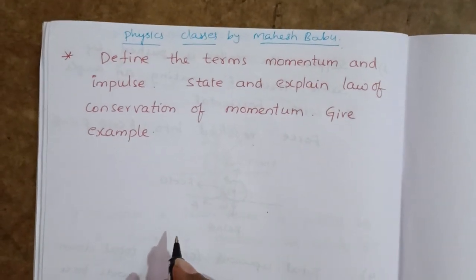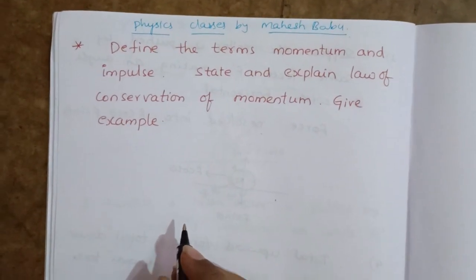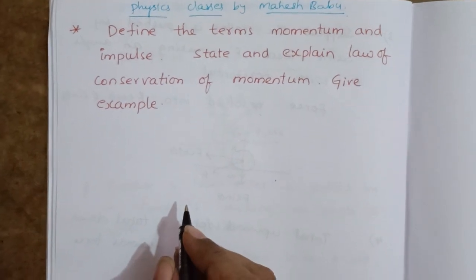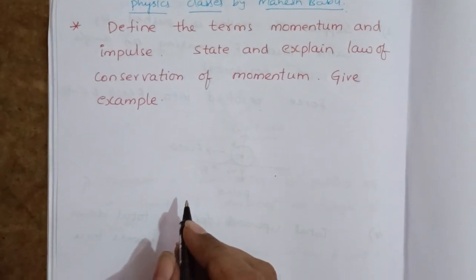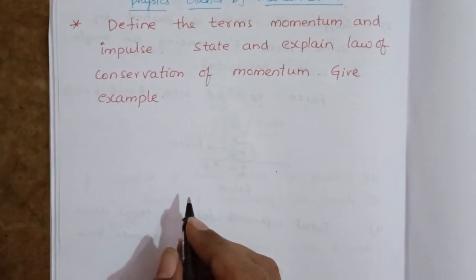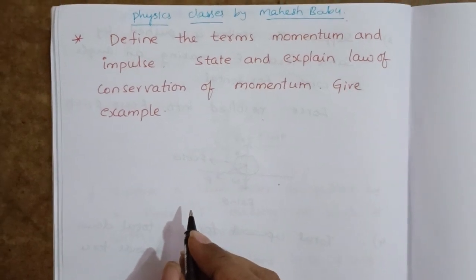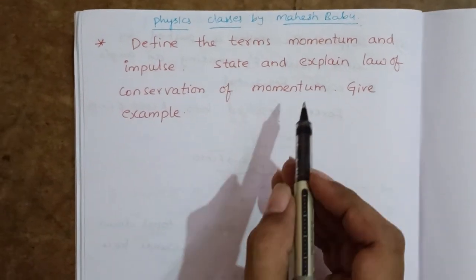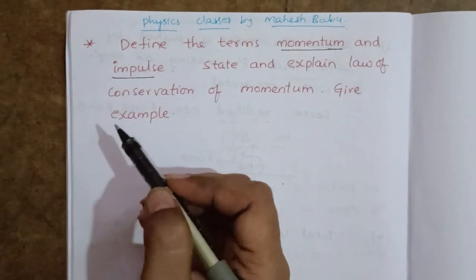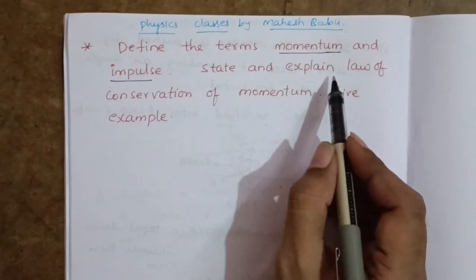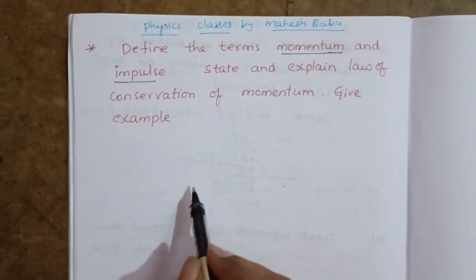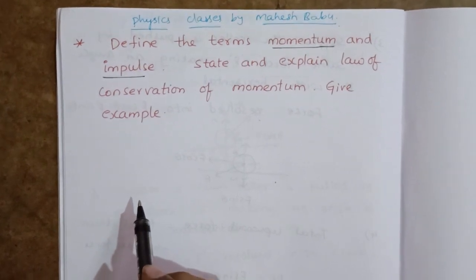Hi students, welcome to physics classes. Now we are discussing important four-mark questions from the lesson Laws of Motion, junior inter physics. The question is: define the terms momentum and impulse, and state and explain the law of conservation of momentum. Give an example.